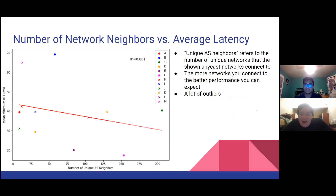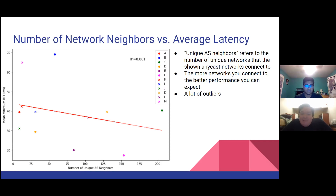On this next graph, we incorporate traceroute requests in order to map the networks that various users will traverse when connecting to these Anycast networks. We're using this data to determine how many unique networks each Anycast network connects to in order to provide their service — some only use 20 networks, while some use 200. Looking at the graph, we can see that the more networks you connect to, the better performance you can generally expect, although the presence of outliers is a bit more pronounced here.